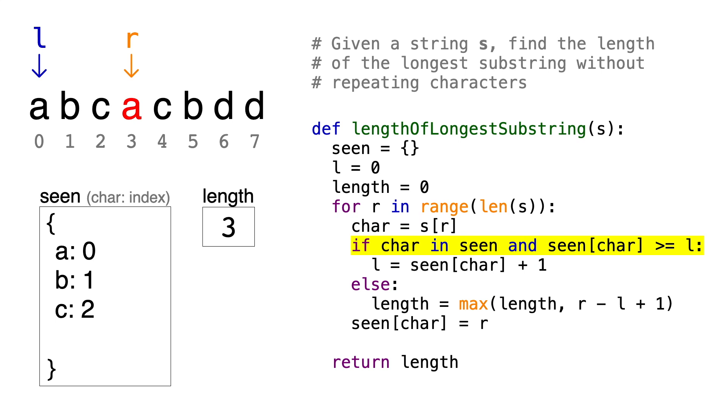We'll do this by finding the last known index of A, then moving the left pointer one spot past this index. The last known index of A is 0, so we'll update L to be 1. Now that the first A is out of the substring, we can move on. We'll update the index of A to now be 3, and we'll continue.